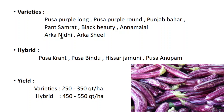Little leaf of Brinjol is a phytoplasma disease. Important hybrids include Pusa Kranti, Pusa Bindu, Hissar Jamuni, and Pusa Anupam. Varieties yield up to 250 to 350 quintals per hectare, while hybrids yield up to 450 to 550 quintals per hectare.